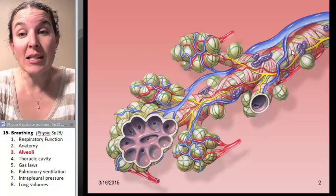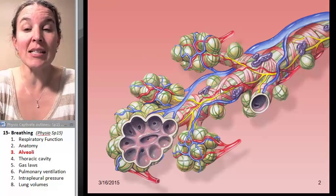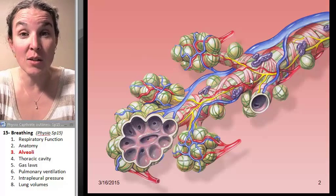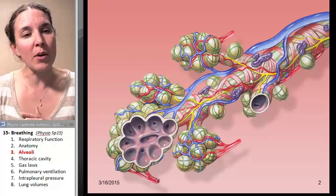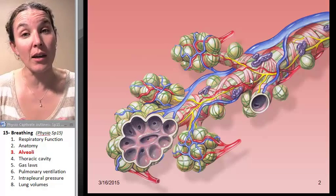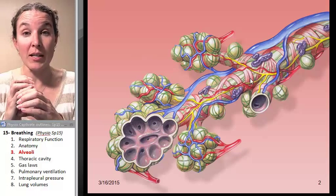I know that this is a bronchiole because it's surrounded in these ribbons, these pink ribbons. That's actually representing smooth muscle. And remember that that was what distinguished bronchioles from bronchi. Bronchioles are surrounded by smooth muscle.